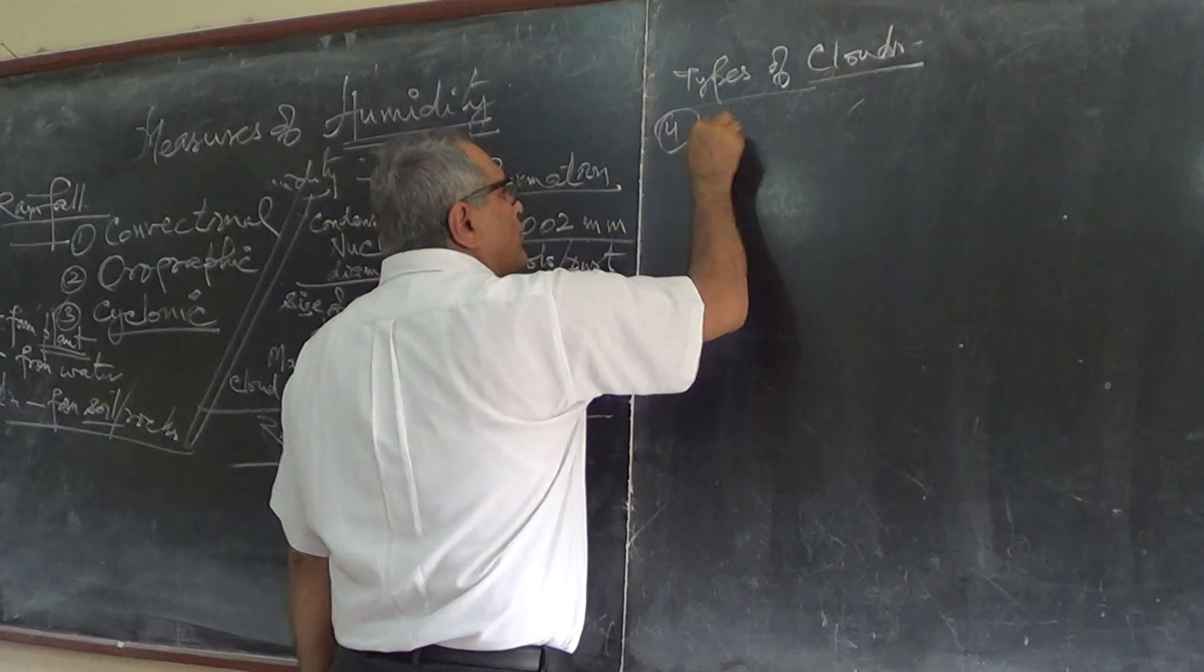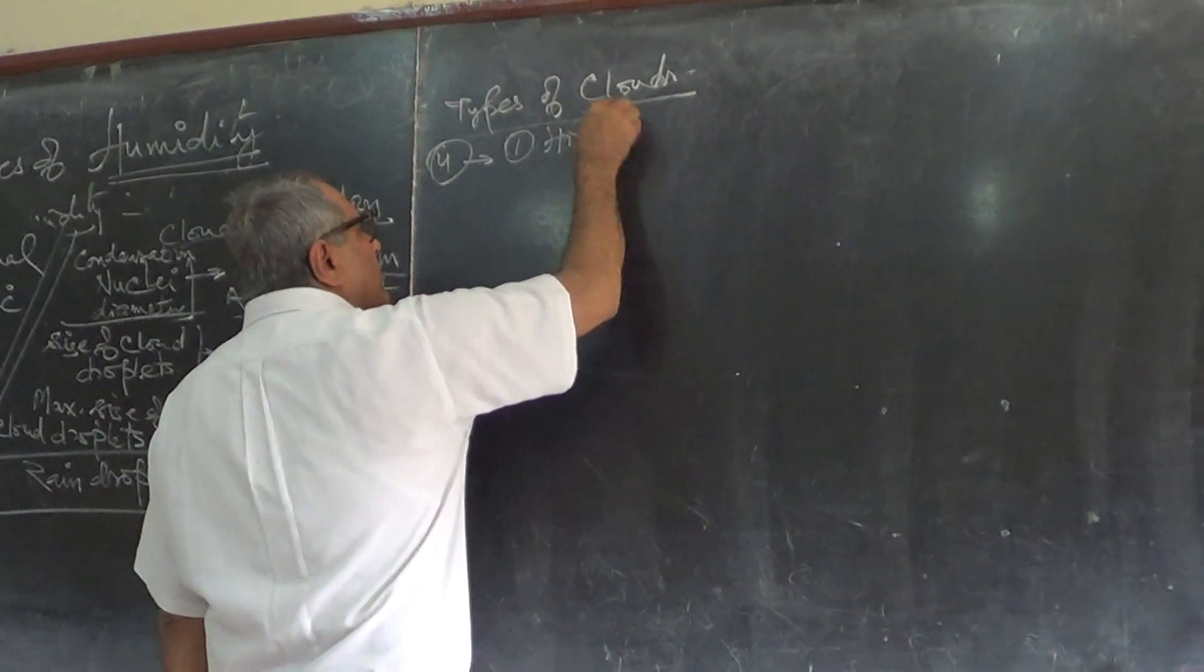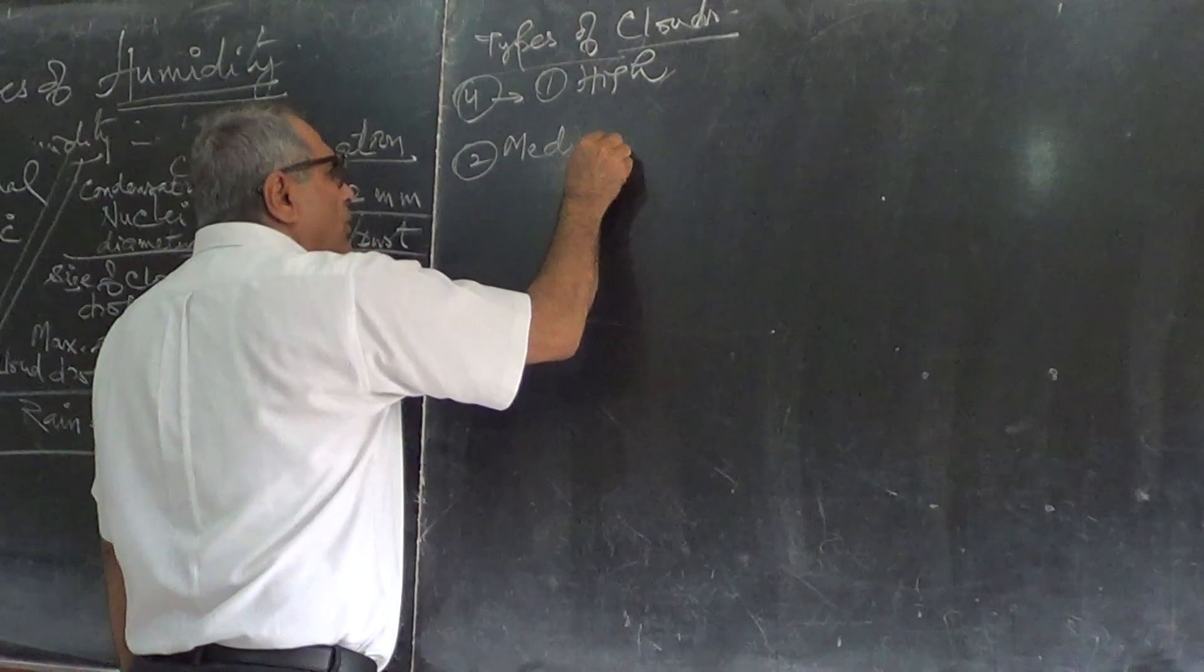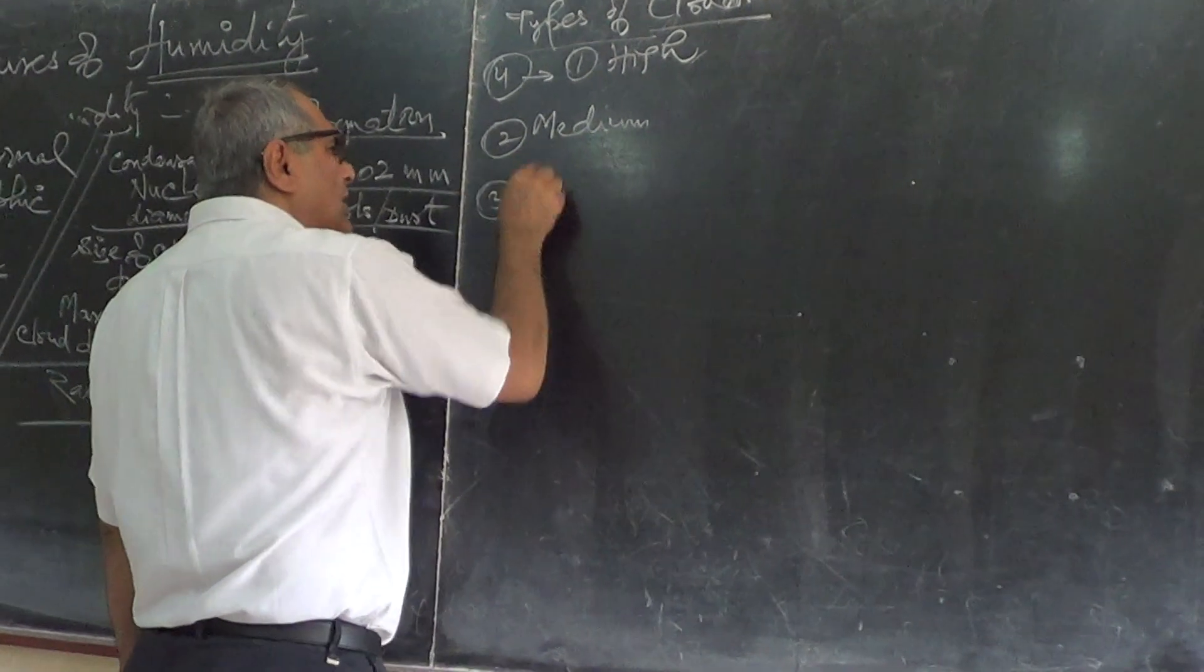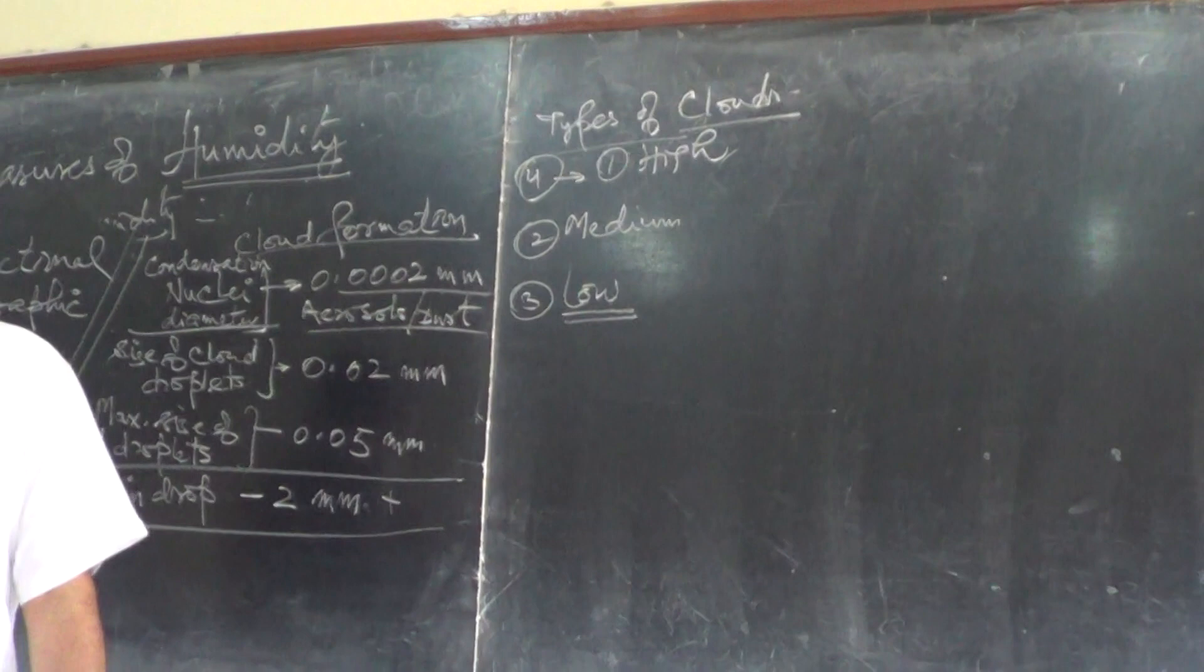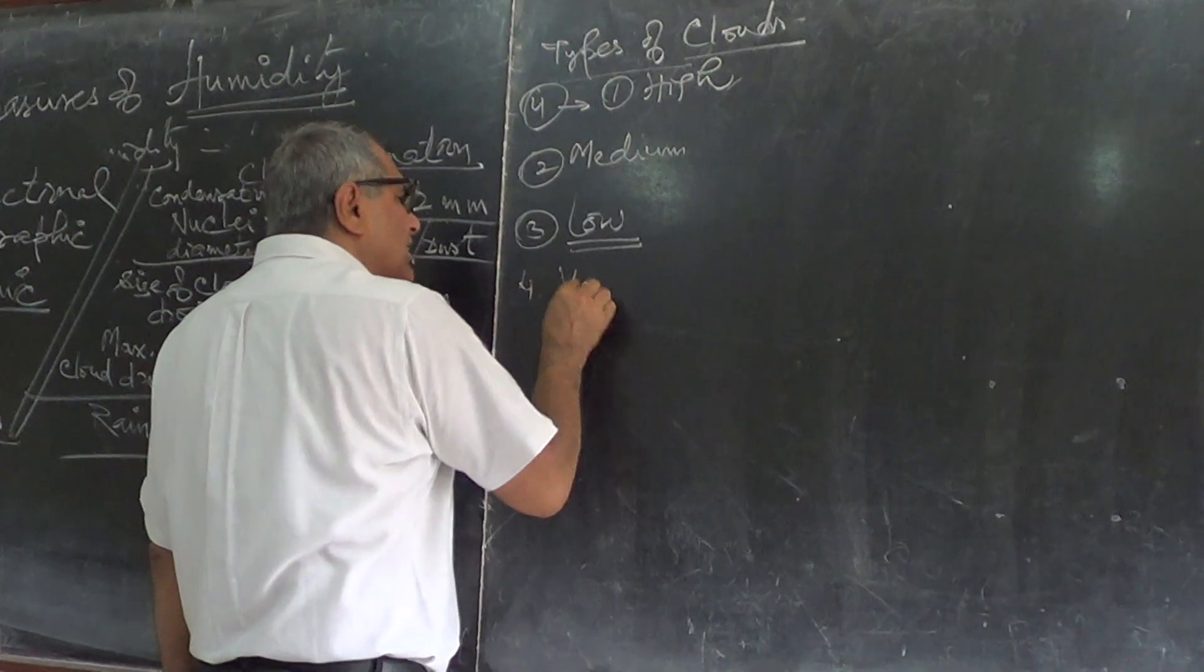Out of those four types, one is high clouds. Second is medium clouds. Third is low clouds. These are the low clouds which yield rain. And fourth is the vertical clouds.